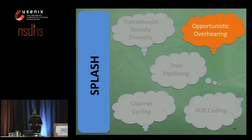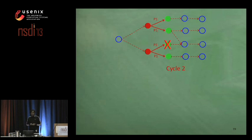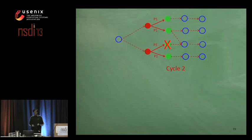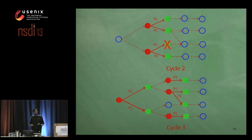Our next technique is called opportunistic overhearing. Consider the second cycle in our tree pipeline, and say that a marked node experiences packet corruption in this cycle. In the next cycle, the node has to idle because it does not have a valid packet to forward.